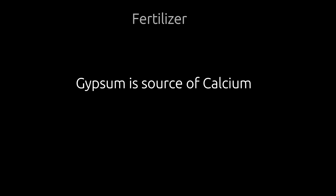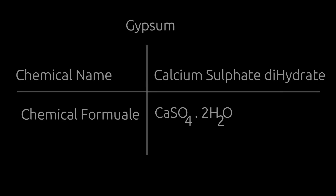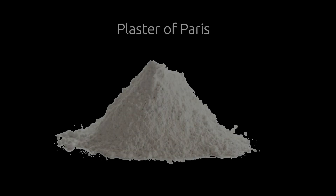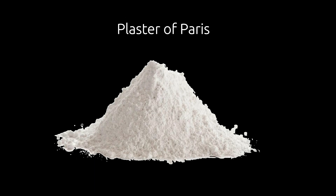The chemical name of gypsum is calcium sulphate dihydrate. Gypsum is also used in making Plaster of Paris. Let's learn more about Plaster of Paris.